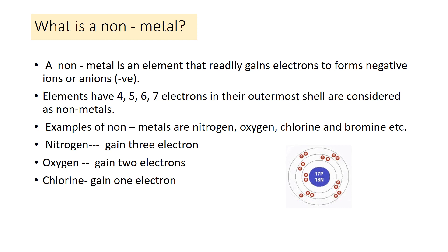So in this way, we can define metals and non-metals. Metalloids are those elements which show properties of both metals and non-metals. If you look at the periodic table, metals lie on the left-hand side, non-metals lie on the right-hand side, and metalloids lie in a zigzag position just before the non-metals.